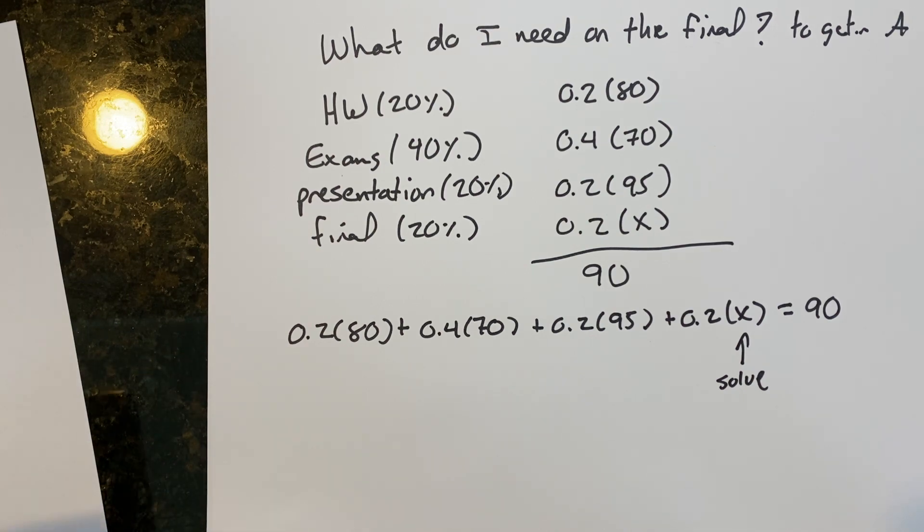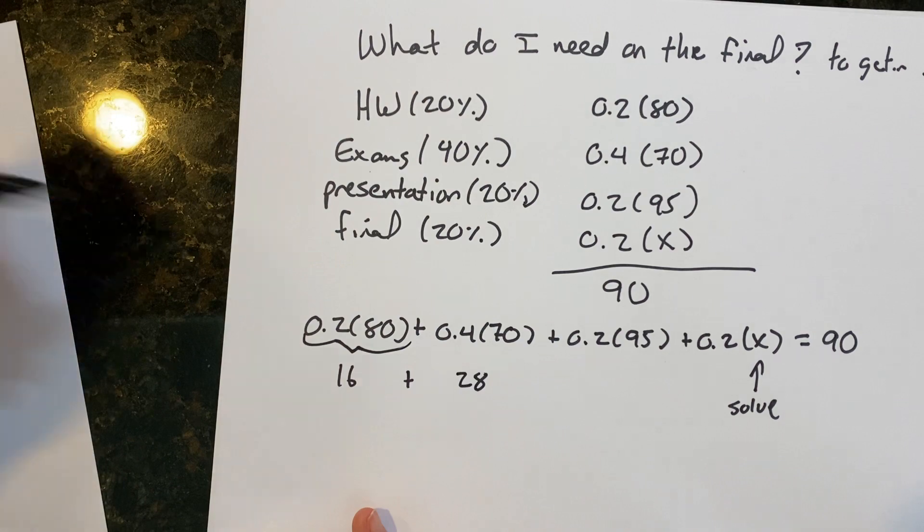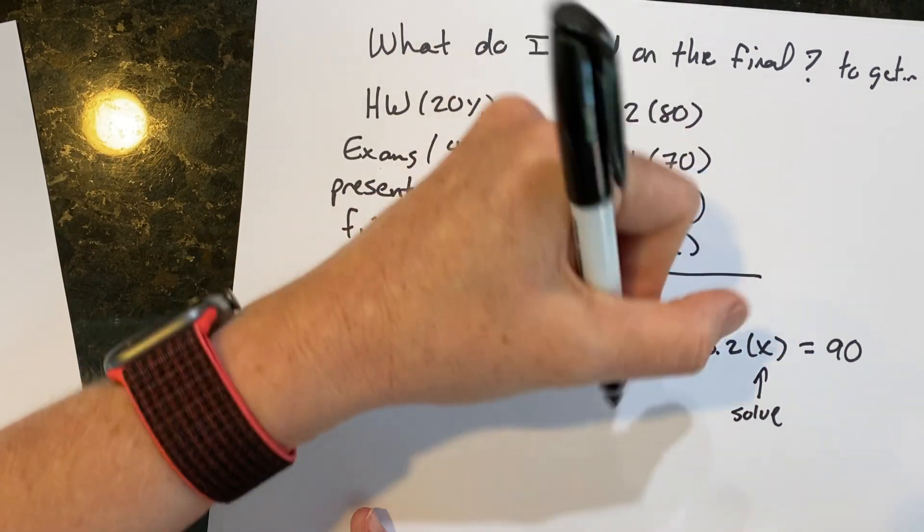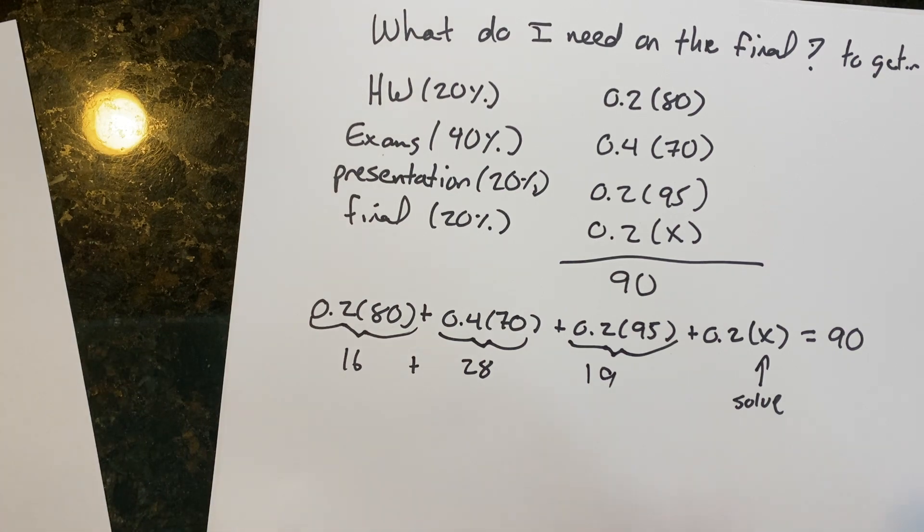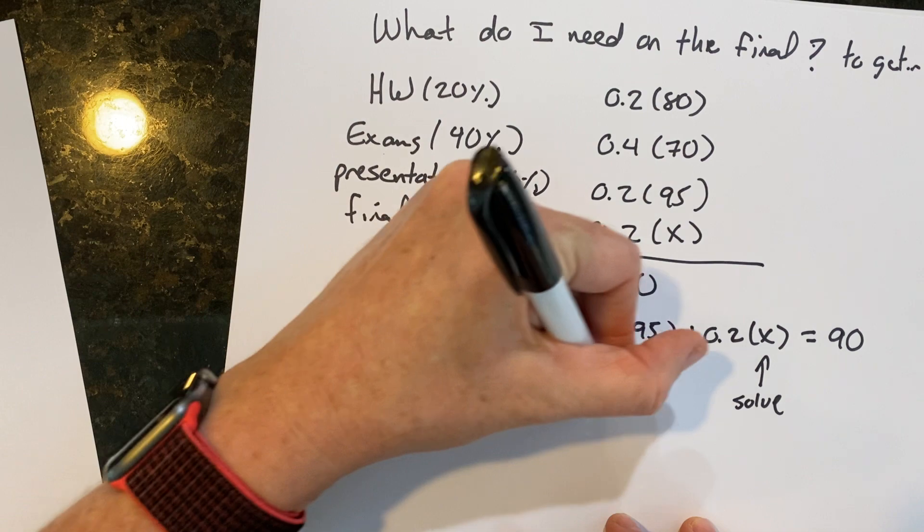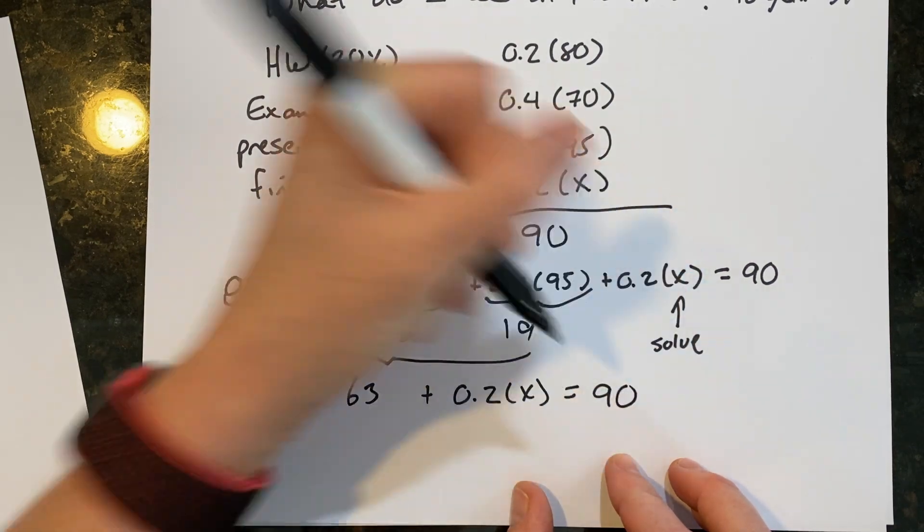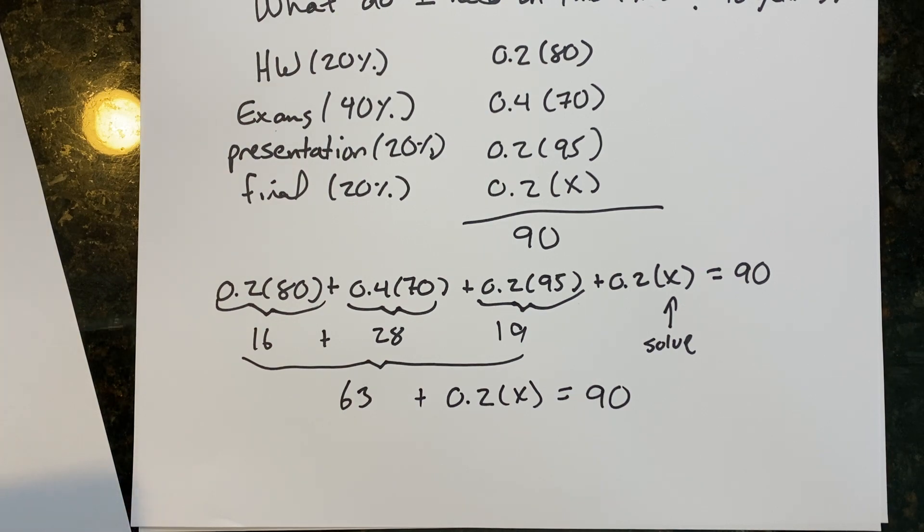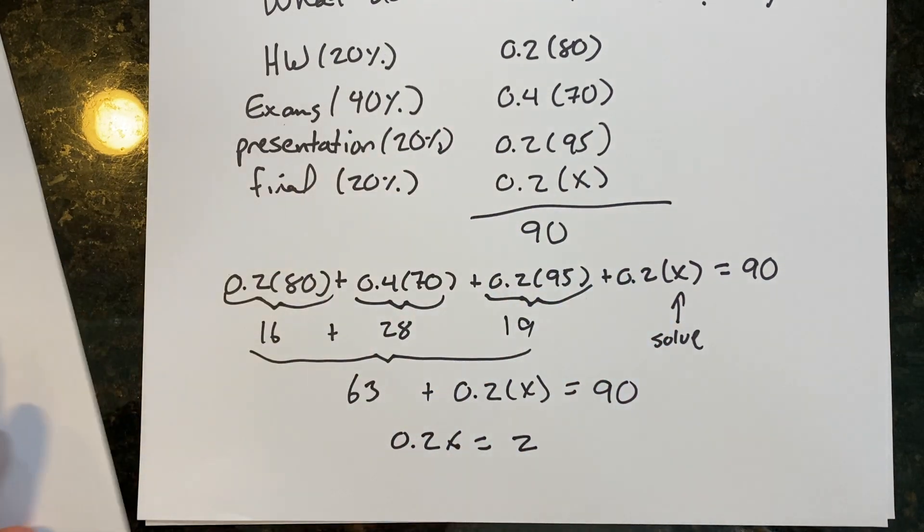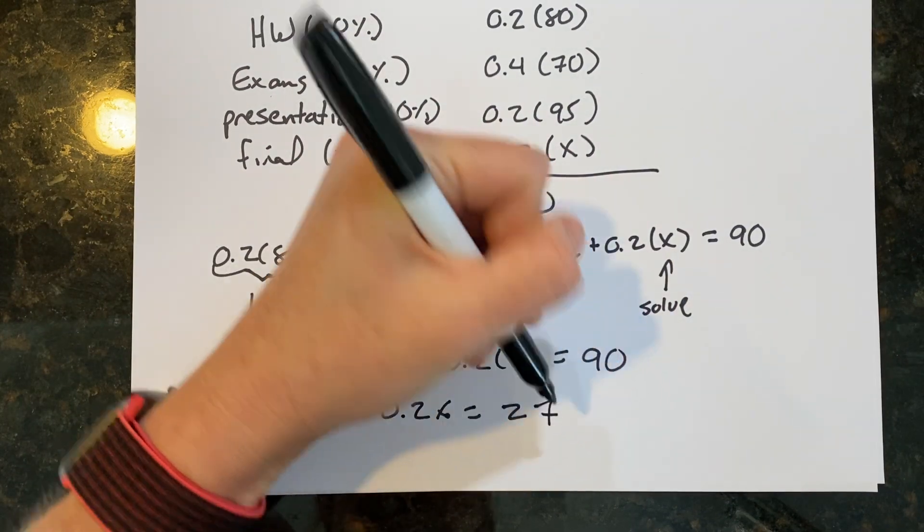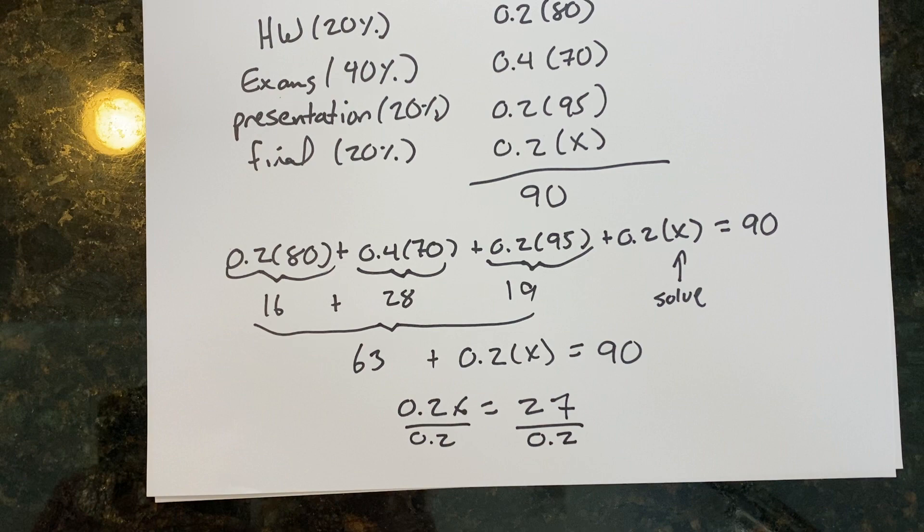Now I can add up these three real quick here. Let's go ahead and do the math just to show you. So if you remember, this one's 16, plus this is 28, and when I say this one I'm talking about that, this is 28, this is 19. So now we have 16 plus 28 plus 19, in other words, 63 plus 0.2 times X is going to equal 90. Subtract 63 from both sides. And now you're going to divide each side by 0.2. So again, 90 minus 63 is 27.